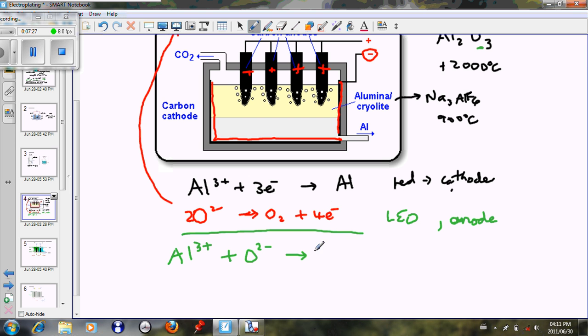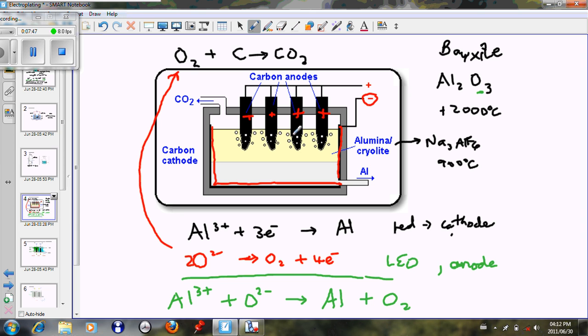Our net reaction will be that we have aluminium ions from the molten alumina and we have oxygen ions from the bauxite Al2O3. Under electrolysis, under the process of electrical energy, it forms aluminium which we tap out as molten aluminium, and it forms oxygen gas. This oxygen gas reacts with the carbon electrodes that we have here at the anode to form carbon dioxide.